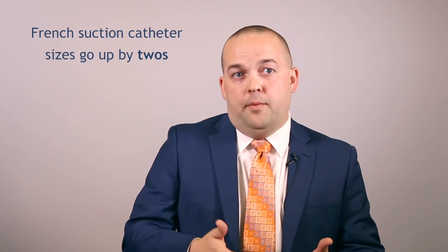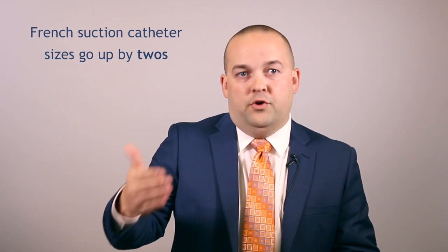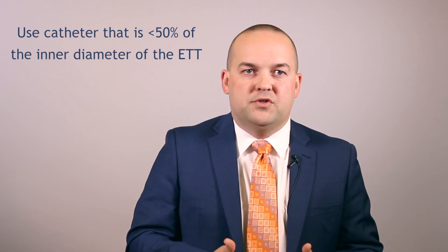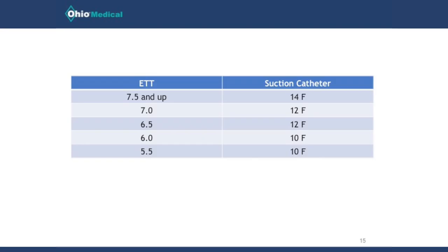Suction catheter sizes in French go up by two — 14 French, 12 French, 10 French, and so on. For adults, we should always use a catheter that is less than 50% of the inner diameter of the endotracheal tube. From the table, for a 7.5 tube and up, a 14 French catheter is acceptable. For a 7.0 or 6.5 tube, a 12 French would be appropriate. For a 6.0 or 5.5 tube, a 10 French catheter would be appropriate.